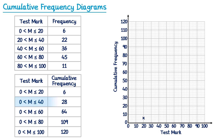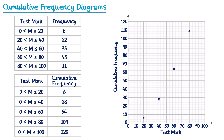Then we move on to the next group from 0 to 40 with a cumulative frequency of 28. This tells us there are 28 people who got up to 40 marks, so at the end point of 40 we plot a cumulative frequency of 28. We continue: an end point of 60 with a cumulative frequency of 64, then an end point of 80 with a cumulative frequency of 109, and finally a test mark of 100 with a cumulative frequency of 120.